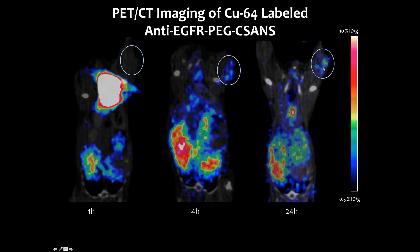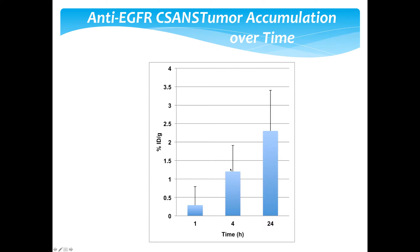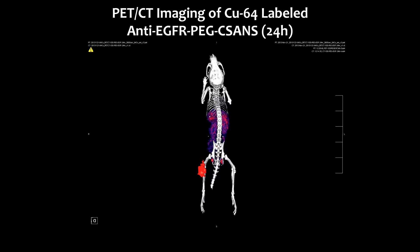At the one-hour time point you see high intensity in the bladder — this comes from free copper-64 that couldn't be completely removed, which is rapidly eliminated. By 24 hours, the percent injected dose in the tumor is going up over time, meaning the half-life in the animal is at least greater than 24 hours. Using PET/CT we can also examine the tumor architecture and see that the nanoparticles are penetrating into the tumor.